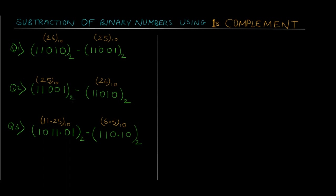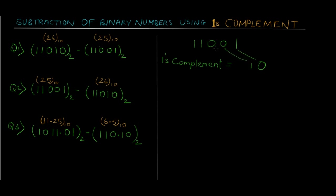Ones complement in binary numbers is basically just flipping of bits. For example, we have the number 11001. To calculate its ones complement we simply flip the bits: ones become zeros and zeros become ones, giving us 00110. That's as simple as that — just flip the bits to calculate ones complement.